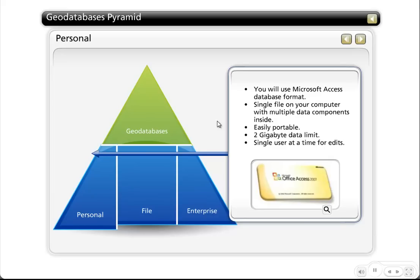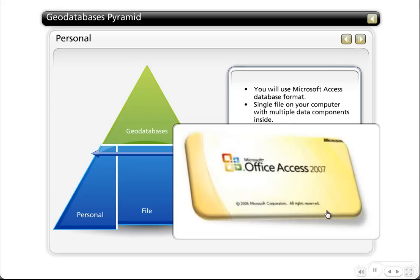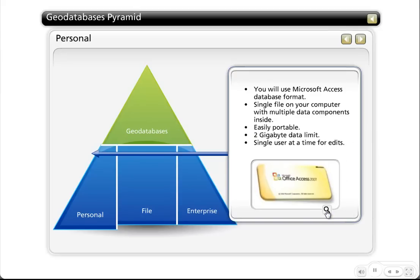There are three types of geodatabases. The first is the personal geodatabase, which uses a Microsoft Access format. Our lesson has you use the personal geodatabase mainly because it's really easy to upload so we can see what you develop. Since it follows the Microsoft Access database format, you can have a lot of different things in your geodatabase but you're only creating a single file on your computer with multiple things inside it — making it easily portable. One limitation is a data storage limit of around two gigabytes, at which point the personal geodatabase will not work.